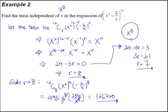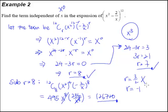Bear in mind that your r value — whatever answer you get for r — must be positive and must be an integer. You cannot have, say, r equals 3 over 2. This is definitely wrong. You can't get r equals negative 1 either — again, this is definitely wrong. So when you do get r in funny numbers like that, you have definitely done something seriously wrong earlier. You better check and go through your answers one more time to see where you went wrong.